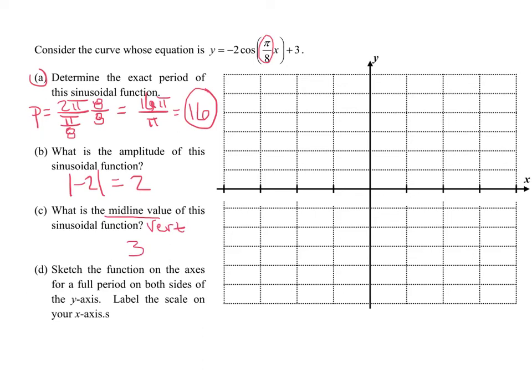They want us to sketch this function on the axes, one full period on both sides. So I need to go 16 radians to the right and 16 radians to the left. I'm going to break that up into even groups, counting by 4s: 4, 8, 12, and 16. Same thing on the negative side. The cosine curve is going to start upside down at a depth of... wait a minute, I've got to move the midline. Let's shift everything up 3 units. We're going to pretend that this blue dotted line is the new x-axis.